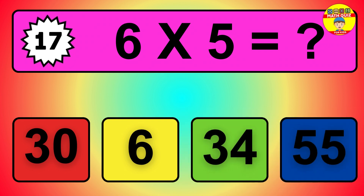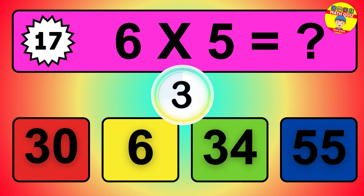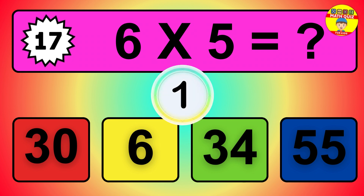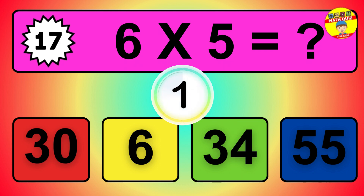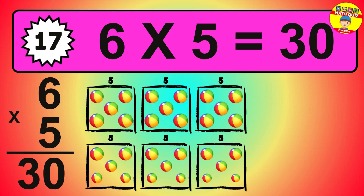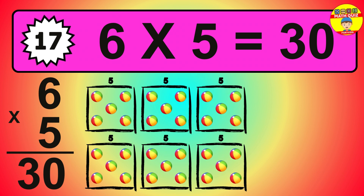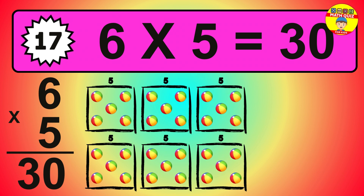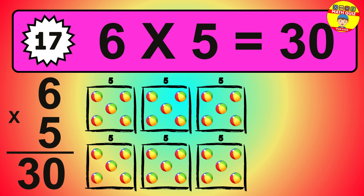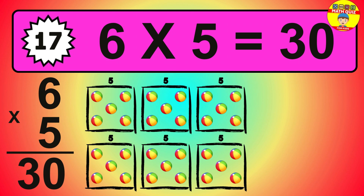Question 17. 6 times 5 equals what? The answer is 6 times 5 is 30. To calculate, we have 6 groups with 5 balls each one. So how many balls do we have? 30 balls.